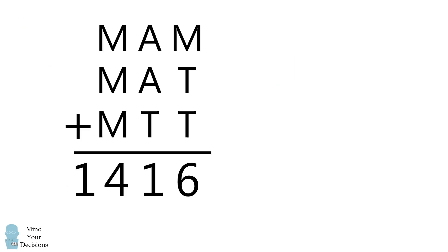We'll get started by focusing on the letter M. Suppose M equals 5. In that case, the sum will be at least 1500, and this is going to be too large of a value because we need the sum to be 1416.